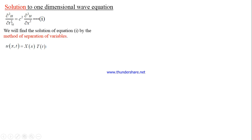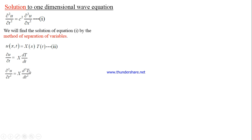Since u satisfies the differential equation, let me substitute u into this equation. If I find ∂u/∂t, capital X is constant, and we get the ordinary derivative dT/dt. Differentiating again with respect to t gives ∂²u/∂t² = X · d²T/dt². Similarly, differentiating with respect to x gives ∂u/∂x = T · dX/dx, and differentiating again gives ∂²u/∂x² = d²X/dx² · T.